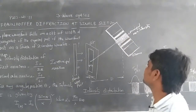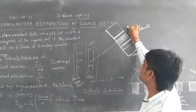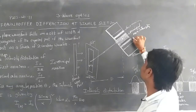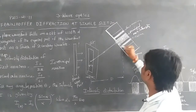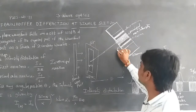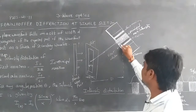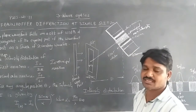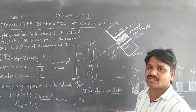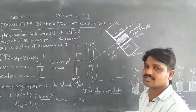Beside the principal maximum are the first maxima of less intensity, followed by dark bands called first minima. As we move further out, the dark bands increase and intensity decreases, so the fringe width also decreases as intensity decreases.